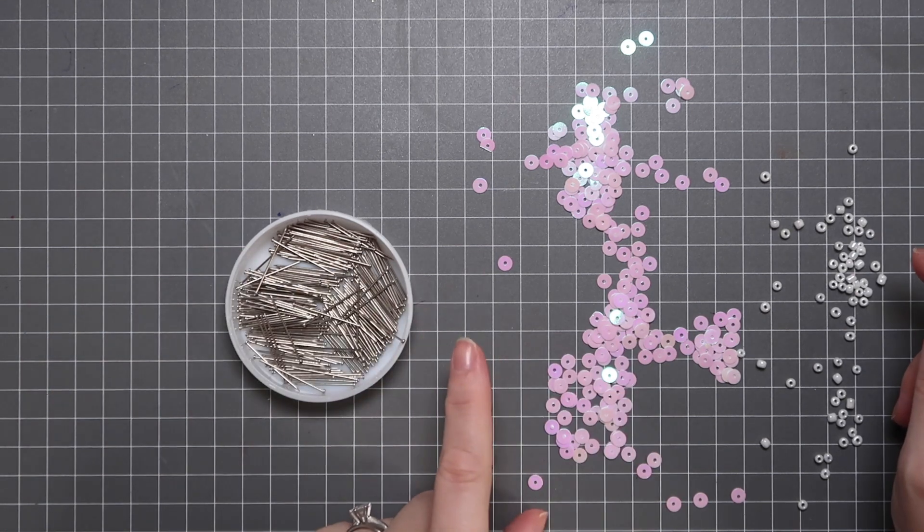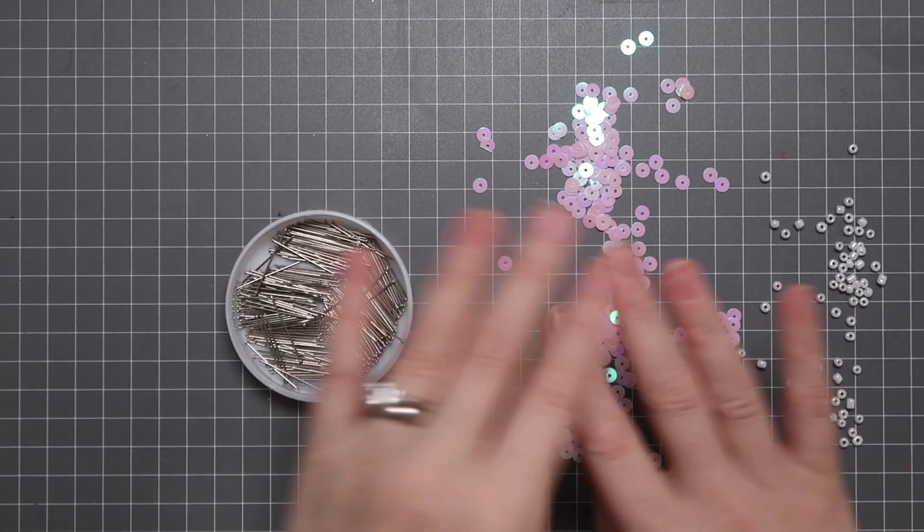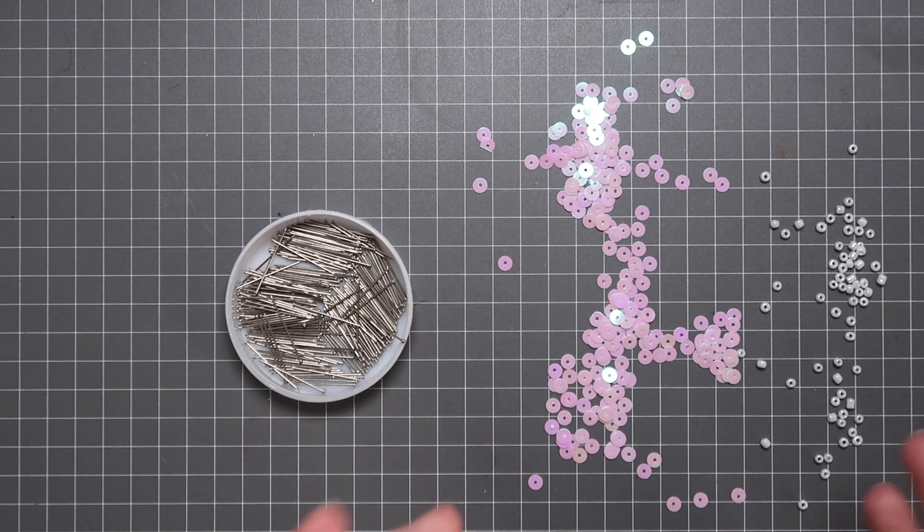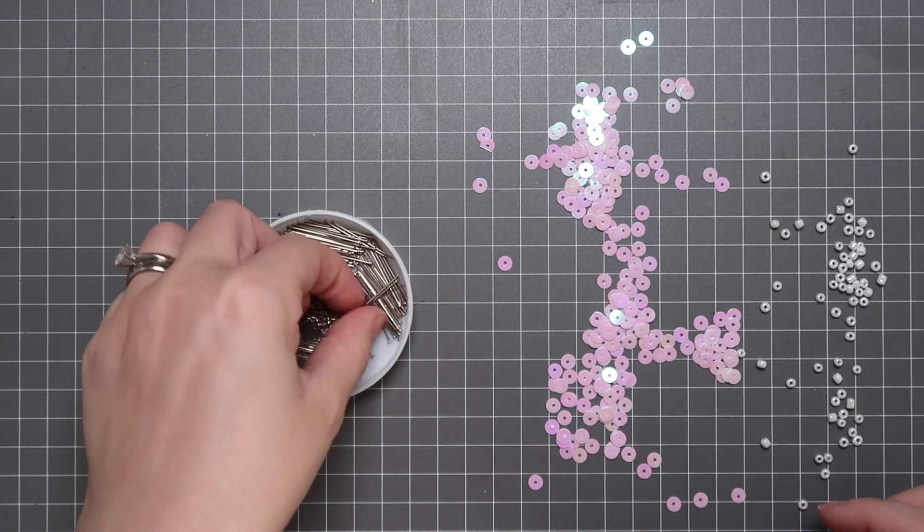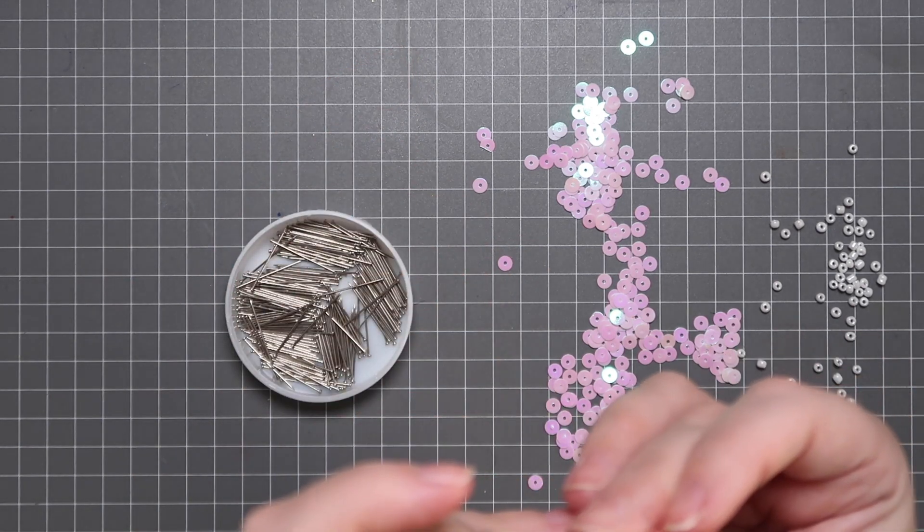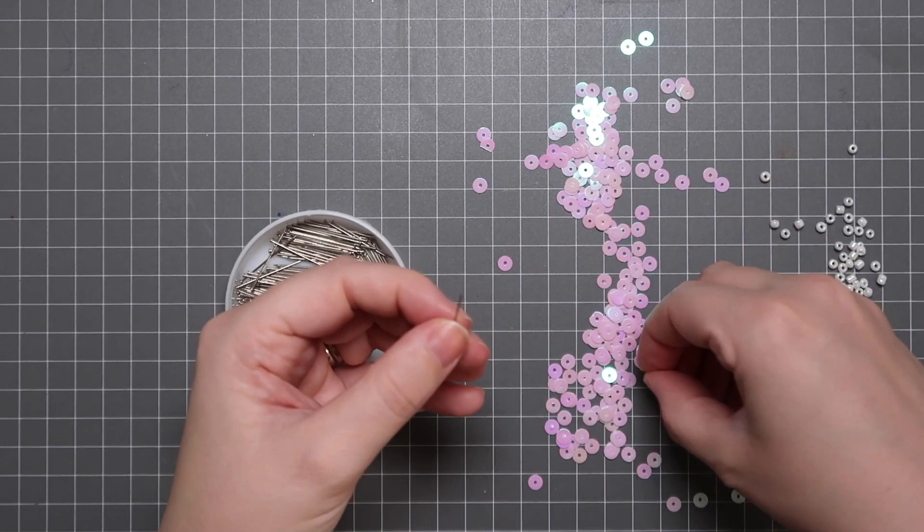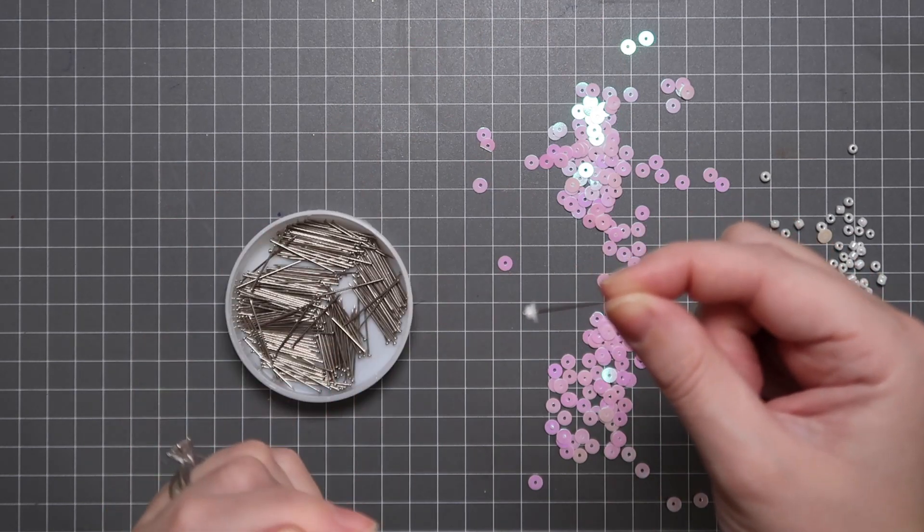Just like with the cupcake liners, I highly recommend you make a whole bunch of them so that you can do a little bit of an assembly line because you will have to repeat this process possibly up to hundreds of times depending on how big that styrofoam ball is. It's very simple. You take your straight pin, thread on a seed bead, and then thread on a sequin. And you're ready to go.